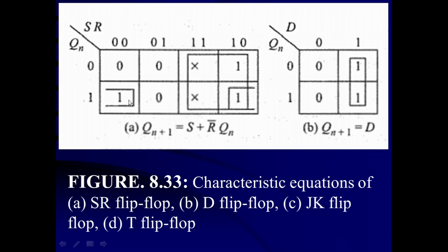For the other group — this one and this one, forming a pair by rolling the map — one variable drops out. Moving between them, S takes values 0 and 1 so S drops out. R=0 in both, so R is complemented: R̄. And Qn=1, so Qn is uncomplemented. For this pair, we get R̄Qn. Therefore the characteristic equation for the SR flip-flop is: Qn+1 = S + R̄Qn.